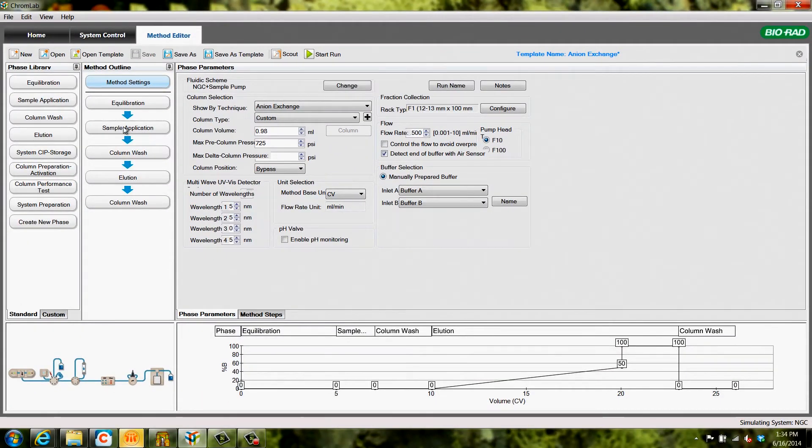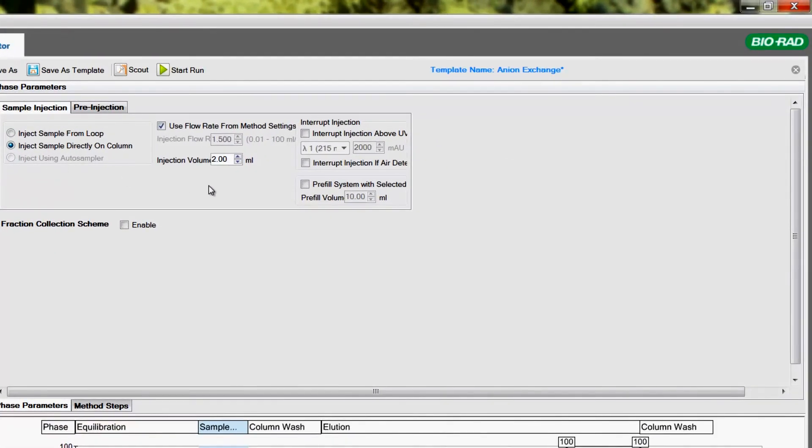For the sample application phase, if using the sample pump with an air sensor, check the box next to interrupt injection if air detected.